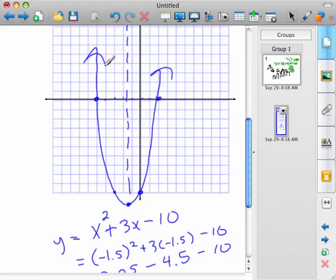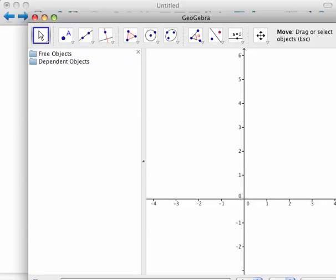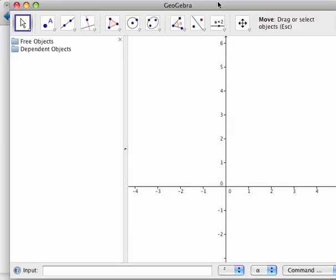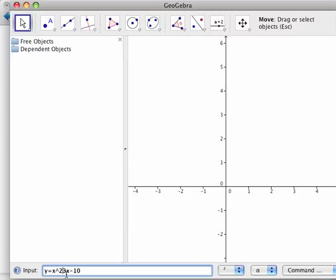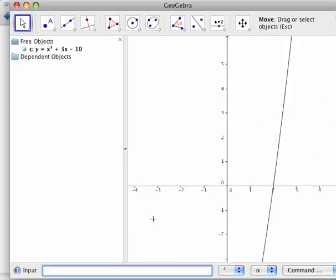You could check that with GeoGebra. And all you have to do is type that in. So, y equals x carat 2. What was the rest of it? Plus 3x. Plus 3x minus 10. Hit enter. Whoops. And I put an equal sign instead of a... So, when you're in a hurry, that's what happens. And we'll zoom out.